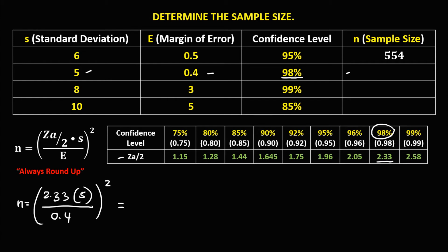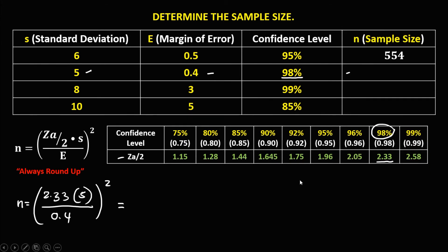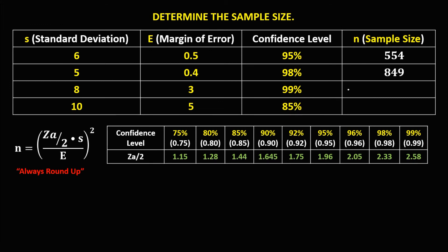To solve for the sample size: 2.33 times 5, divided by 0.4, then to the power 2. The sample size is 848.26. Since we always round up, the sample size is 849.